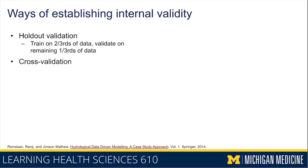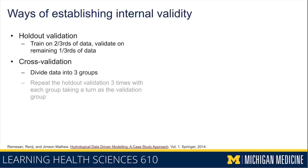Another way is to do cross-validation. An example of cross-validation would be dividing your data into three groups and repeating the process of holdout validation three times, where each of those three groups takes a turn being the validation group. You train the model on two of the groups, test it on the third group, and then rotate around until each group has had a chance to be the test or validation group.